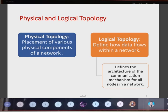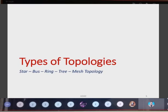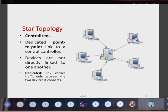Physical topology refers to the placement of various physical components of a network, whereas logical topology defines how data flows within the network and describes the architecture of the communication mechanism for all nodes. The first type is star topology. In star topology, the server is centralized. There is a dedicated point-to-point link to a central control, which is the server. Devices are not directly linked to one another — all devices are linked to the central server. The link is dedicated and carries traffic only between the two devices, that is the client and the server.